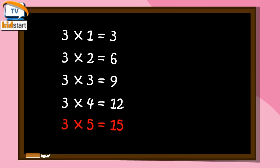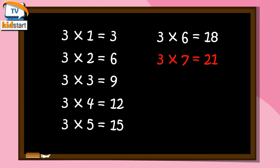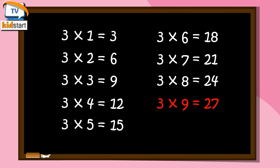Three fives are fifteen. Three sixes are eighteen. Three sevens are twenty-one. Three eights are twenty-four. Three nines are twenty-seven. Three tens are thirty.